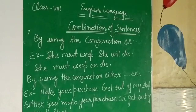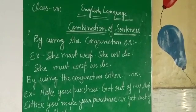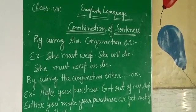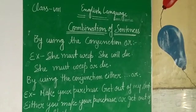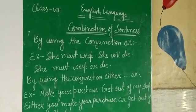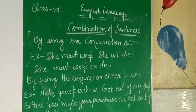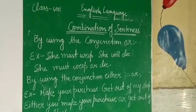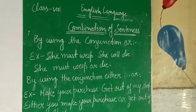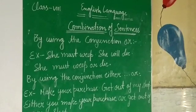Now by using the conjunction 'either...or'. Example number one: make your purchase. Get out of my shop. Two simple sentences. By using 'either...or': either you make your purchase or get out of my shop.